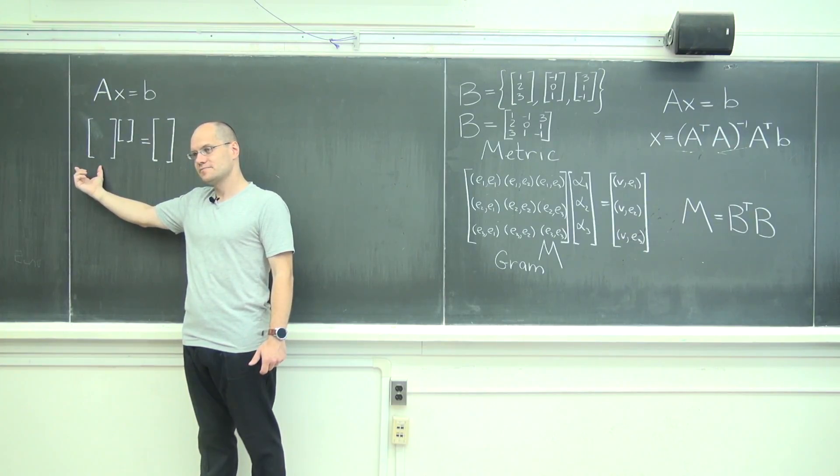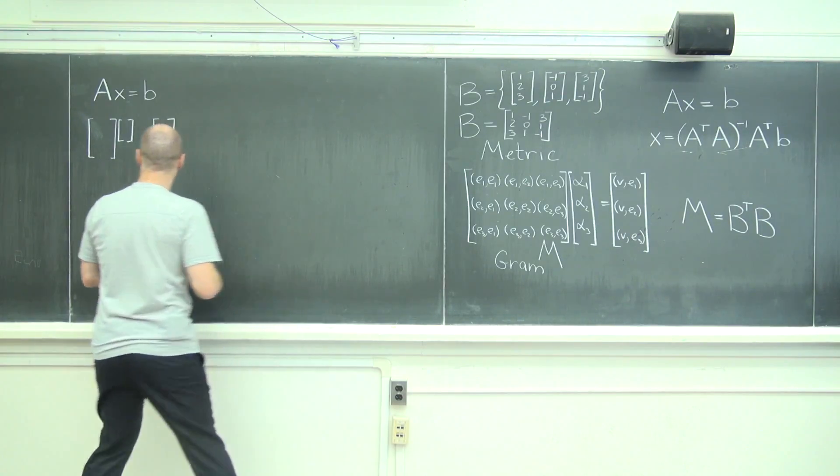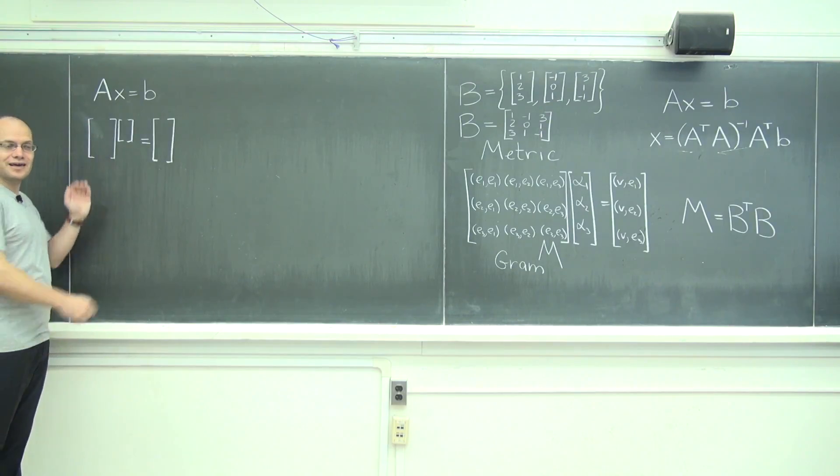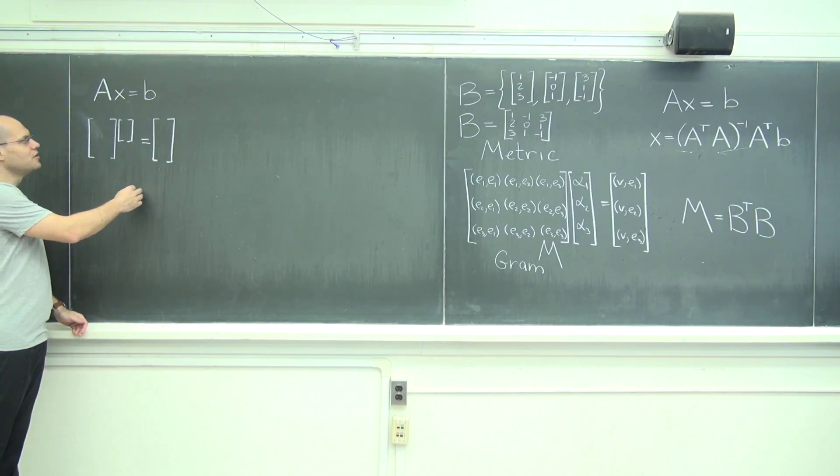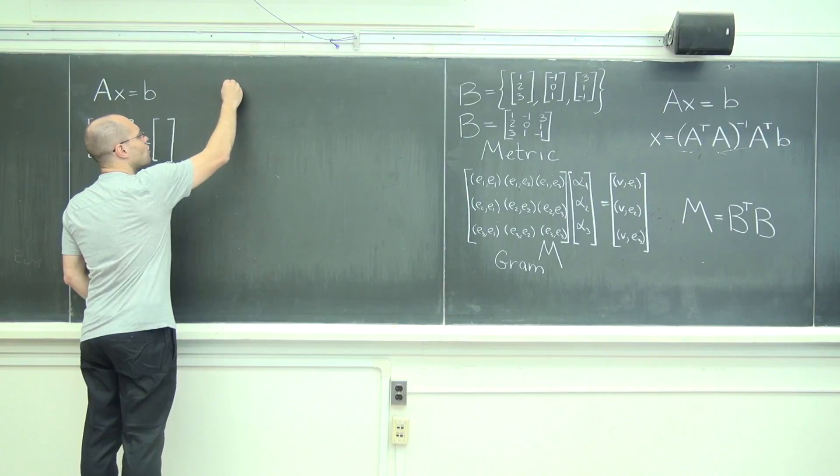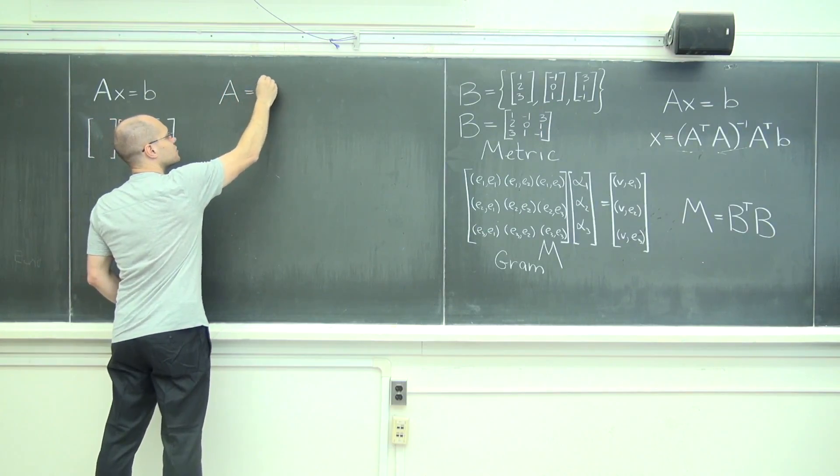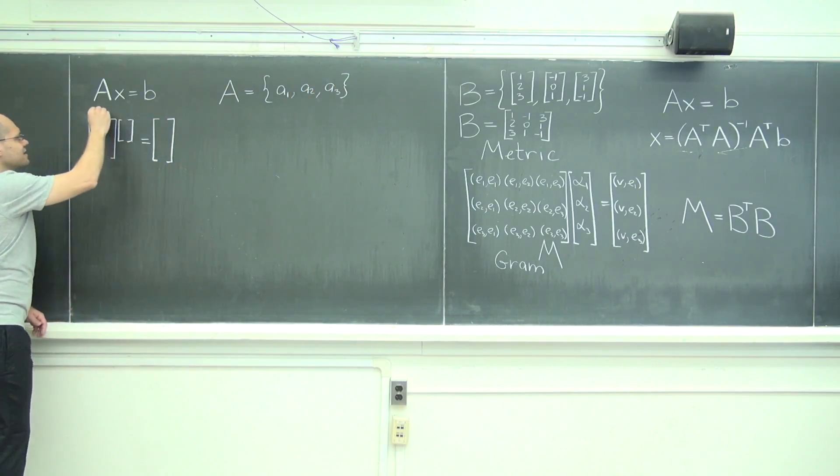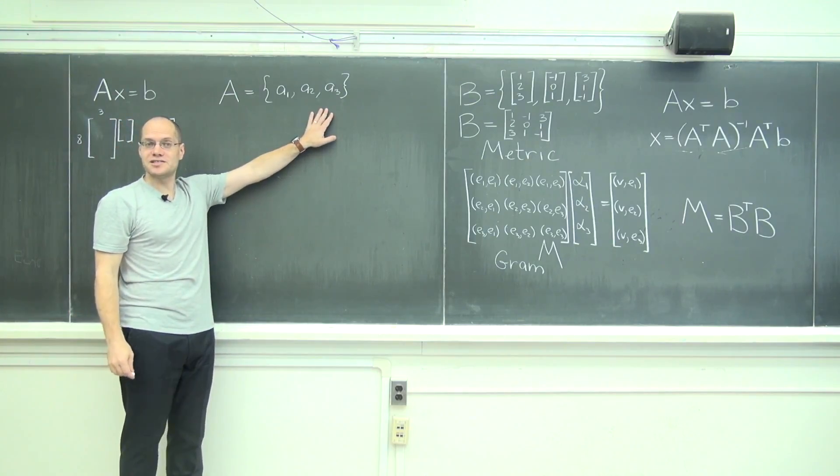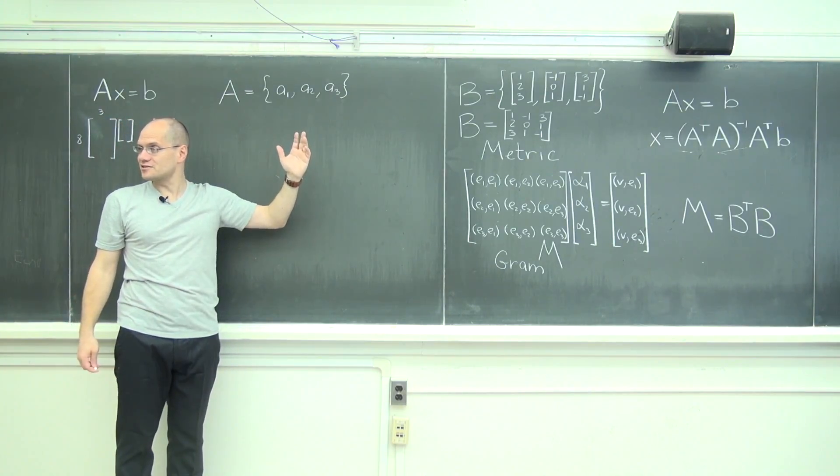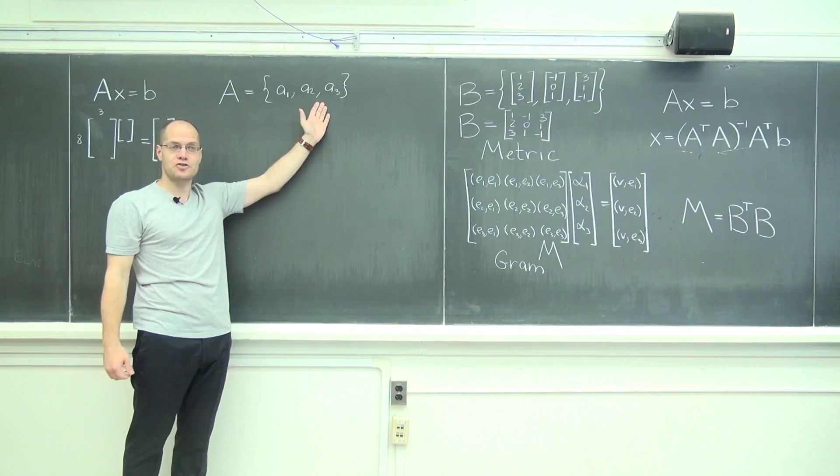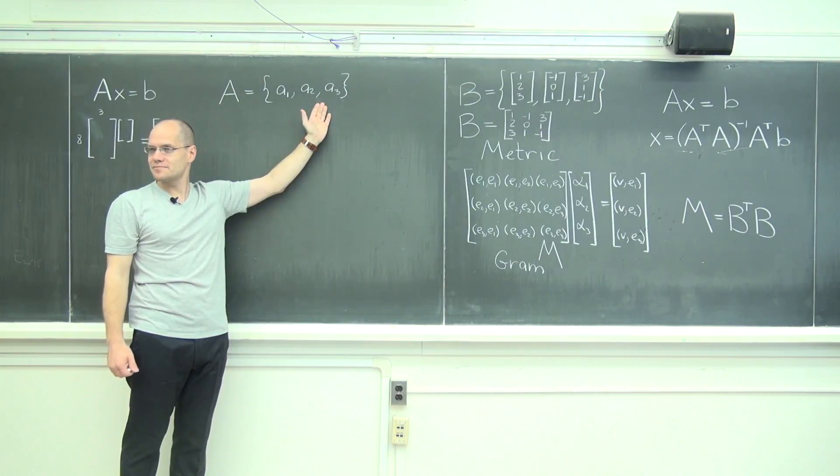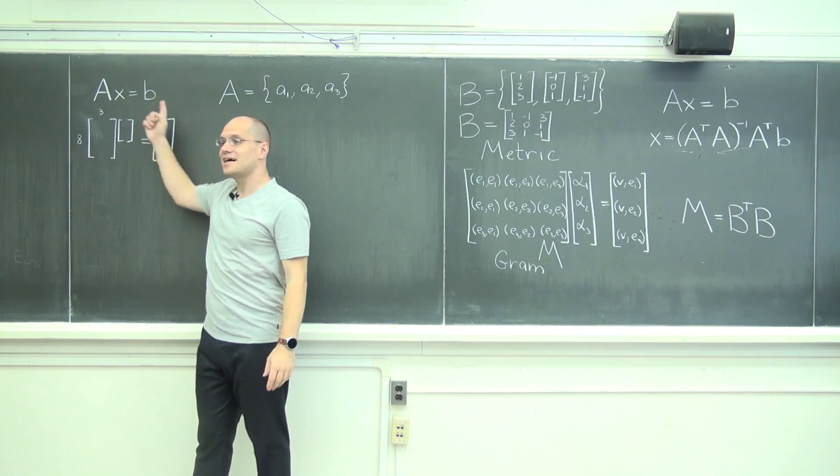So we can describe it the following way. If we call the columns of A: a₁, a₂, a₃, we can think of it almost as a 'basis want-to-be'. So it's going to look like this: three by eight, something like that. So I can't possibly call this a basis because there aren't enough vectors, but it's certainly a basis for the three-dimensional span to which the right-hand side does not belong.